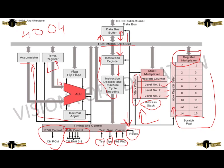Temporary registers store the data and process it to the arithmetic and logical unit, which performs all arithmetic and logical operations. The data is processed to the decimal address, which adjusts all decimal points to the ALU. The ALU passes the data back to the flag flip-flops. Flag flip-flops send the data to the 4-bit Intel data bus, which processes the data to the data bus buffer. The data bus buffer consists of 4 bits from D0 to D3 bidirectionally, where we get the output.